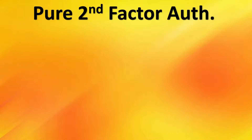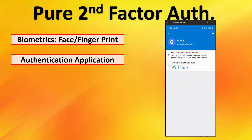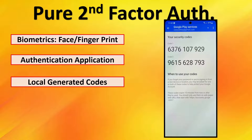Next, we'll cover the second-factor authentication methods — what I consider pure second-factor methods. The first one is biometrics, which is something you are: a retina scan, facial scan, or fingerprint. Next is the authentication application, which generates one-time codes that are typically refreshed every 30 seconds, and then you would enter these codes to authenticate to your account. Locally generated codes are generated by an app but do not require an internet connection or a cell connection.